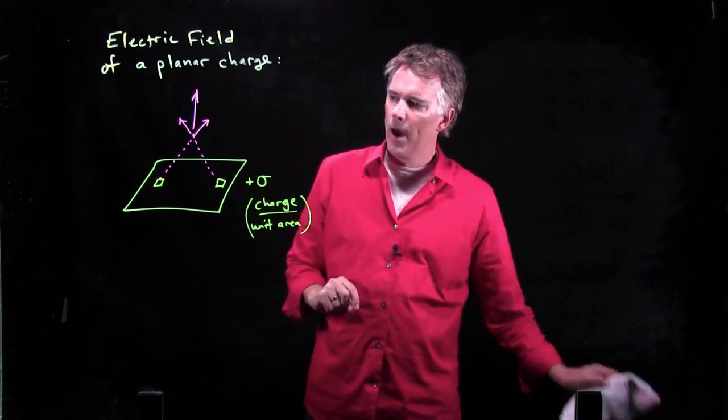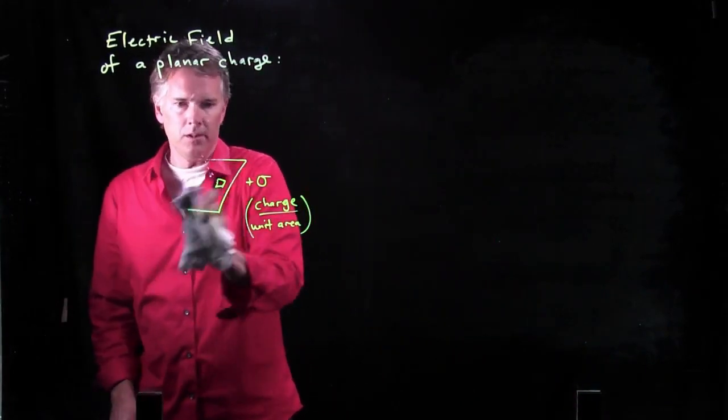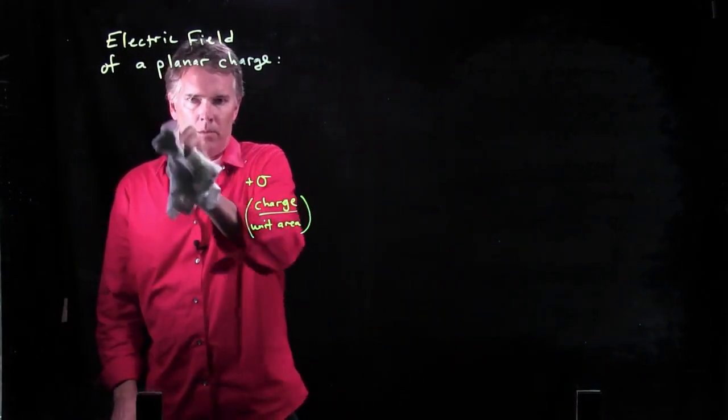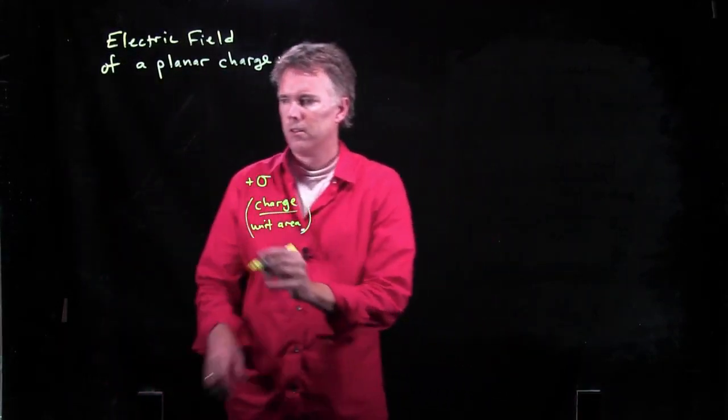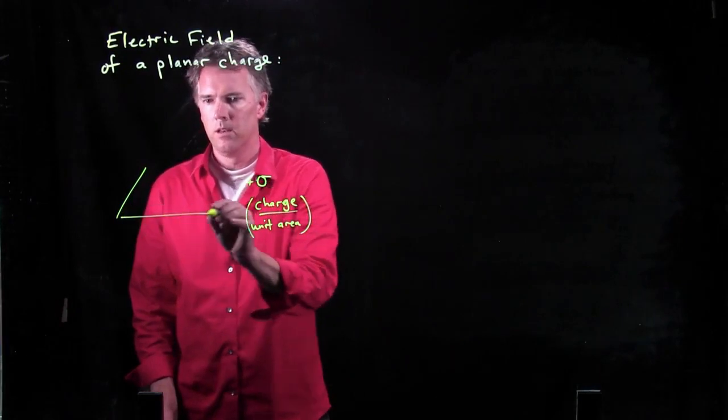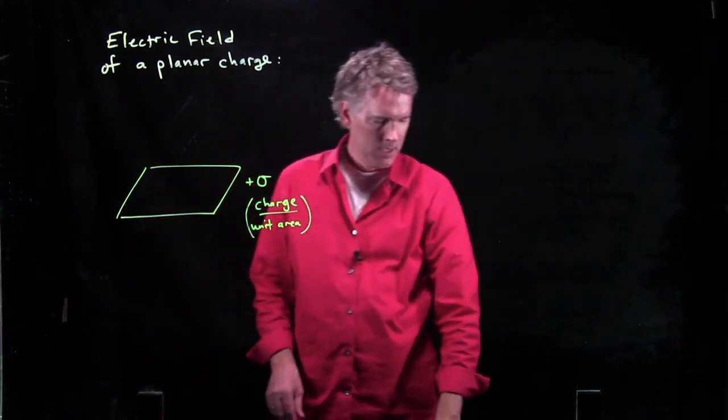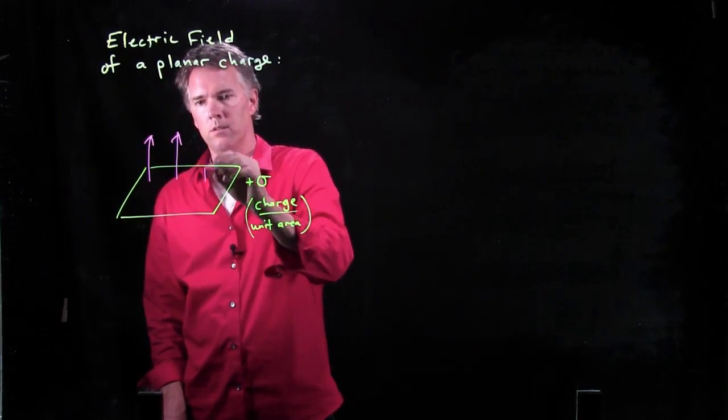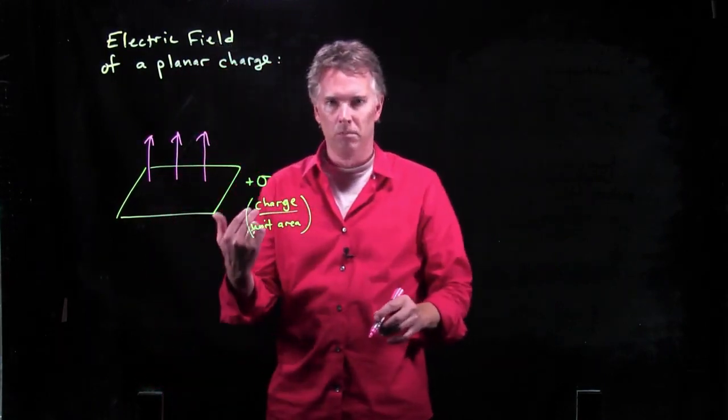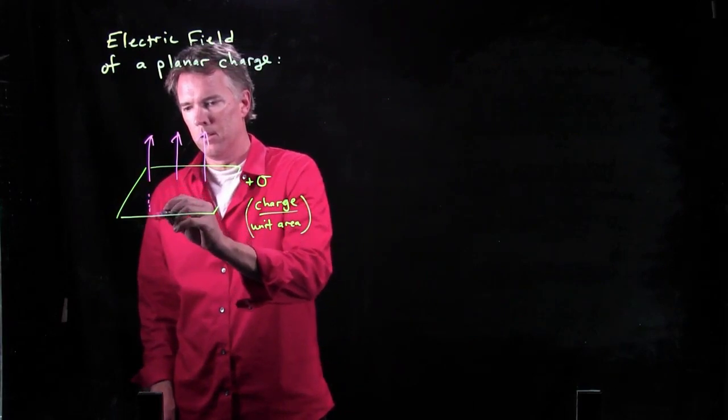So when you're going to draw the electric field from a plane, remember it always points normal to the plane. So let's draw it again. Here's our plane of charge. Electric field above is up. Electric field below is down.